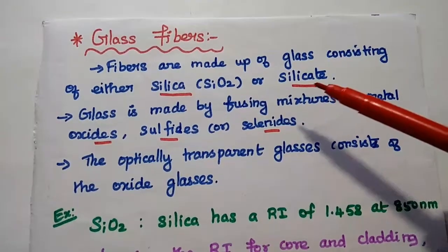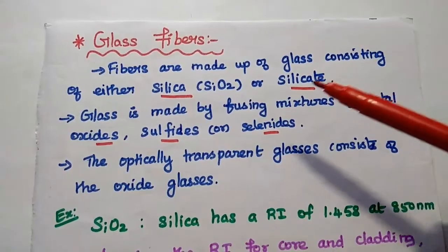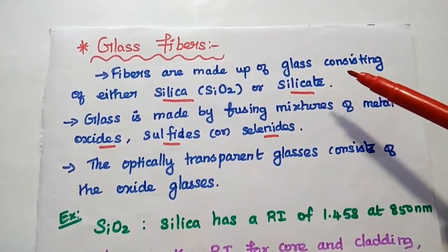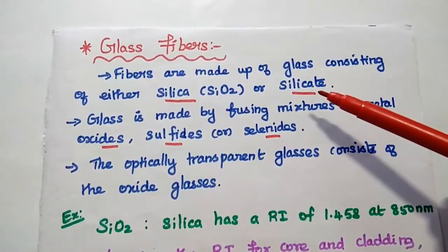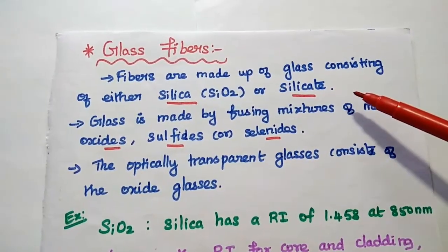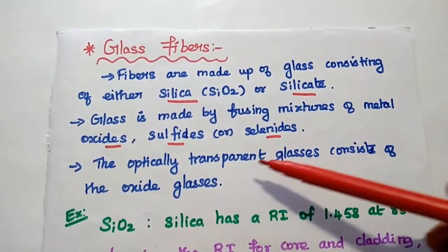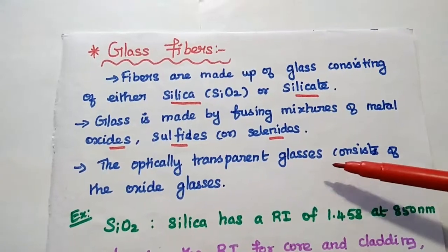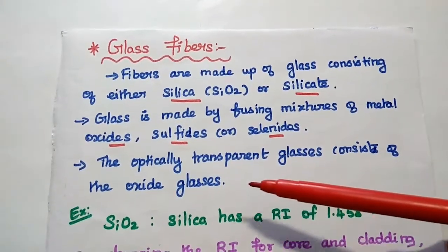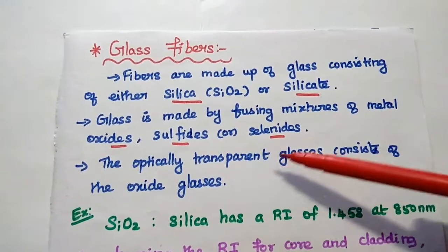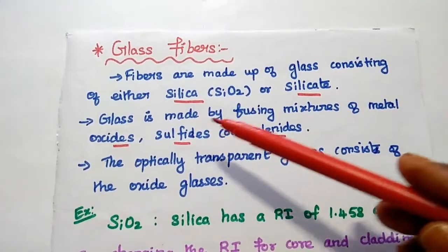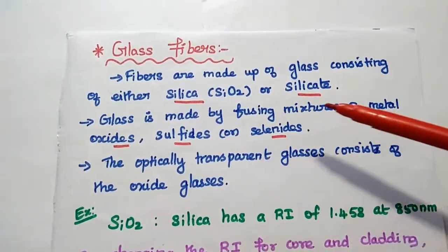Next, glass fibers. Fibers which are made up of glass materials of either silica or silicate are known as glass fibers. The optically transparent glasses consist of the oxide glasses. So, for getting this transparent property, the glass is made by fusing the mixture of metal oxides, sulfides or selenides.